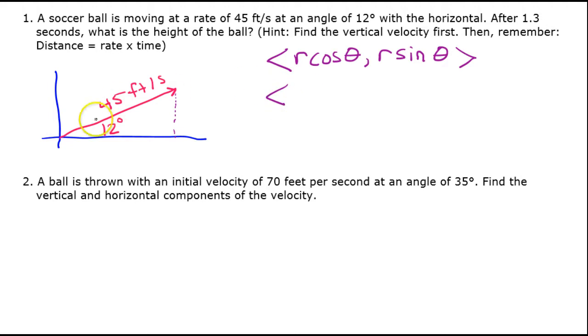So in this case, the magnitude is 45. So that's 45 cosine 12 is the direction, 12 degrees. And then r sine theta will be the vertical component of this vector. So that would be 45 sine 12. So you can evaluate this in a calculator.